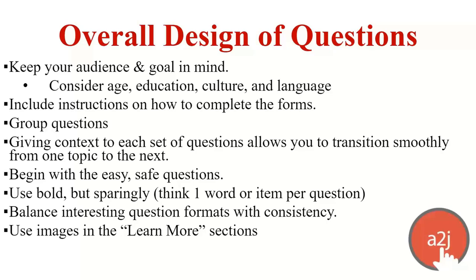You can also balance interesting question formats with consistency. A2J Author allows you 14 different field types plus buttons, giving you a lot of flexibility in how you present questions. However, you probably shouldn't use all 15 options. Instead, use radio buttons, checkboxes, fields, and buttons that gather information and move the end user — keep a consistent look throughout. You can always add images or videos to the learn more sections, because a picture or video is worth a thousand words. Some people are more visual, and it helps break up a lot of text.